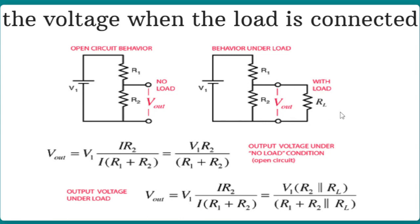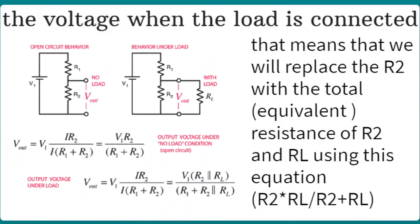Because R2 and R_L are connected in parallel, we need to calculate their equivalent resistance, and then calculate the voltage across them. The equation for V_out becomes: V_out equals V_in times (R2 parallel to R_L) divided by R1 plus (R2 parallel to R_L). We replace R2 with the equivalent resistance of R2 and R_L, calculated as: R2 times R_L divided by R2 plus R_L.